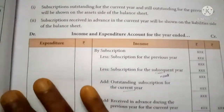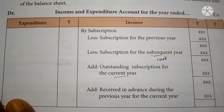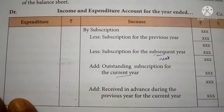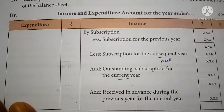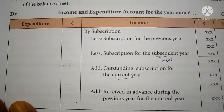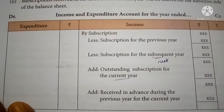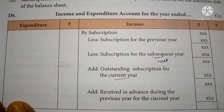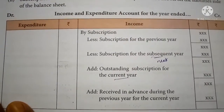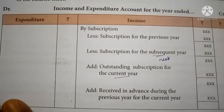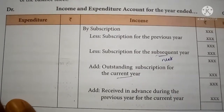Here is a specimen showing how subscription is adjusted while preparing the Income and Expenditure account. The account should be prepared using both sides of your notebook — the left side is the debit side and the right side is the credit side. The debit side maintains the expenditure column and the credit side maintains the income column. Subscription is recorded on the income side.